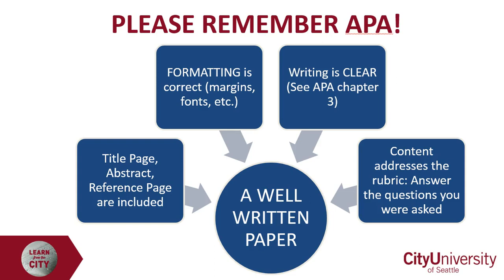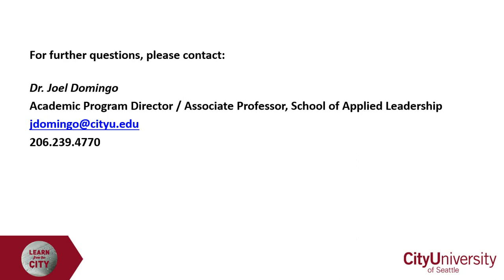The final thing is: do you answer the question you were asked? The content must address the rubric. When you write the paper, have the rubric next to you so you can look at it and answer the question. It's a pretty straightforward paper — if you divide it into sections, you'll have five sections: your intro, three sections of the paper, and then a conclusion. Just answer the question and you'll be fine. I hope that's helped — if you have any questions, don't hesitate to contact me. I saw some great writing on your last paper and I expect the same for this. Thanks again and I'll see you online.